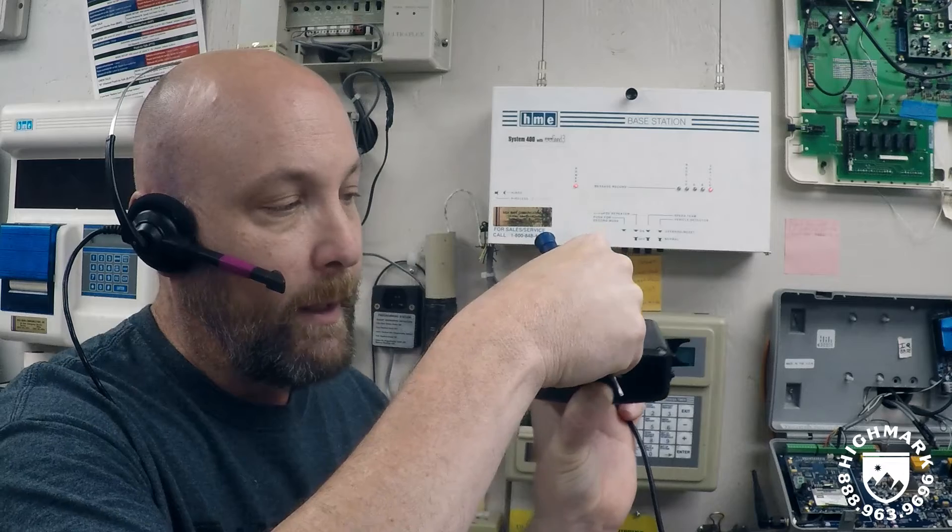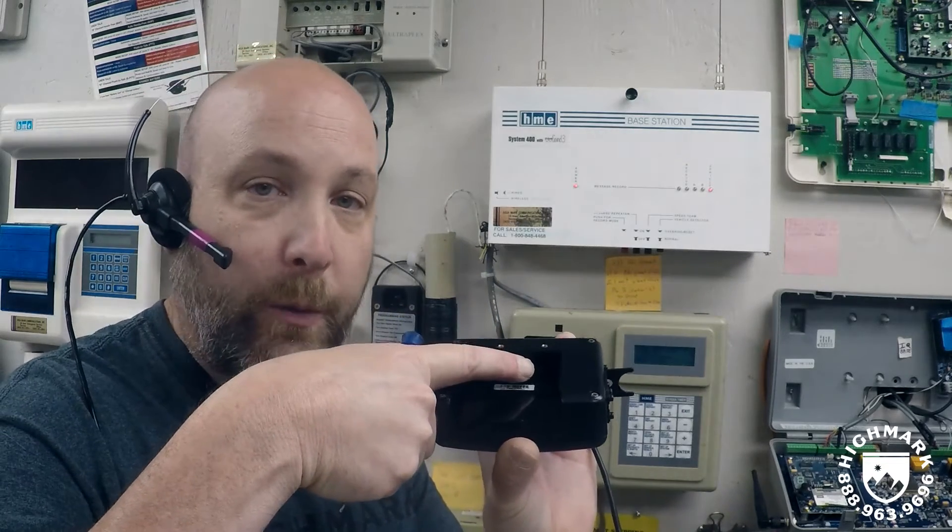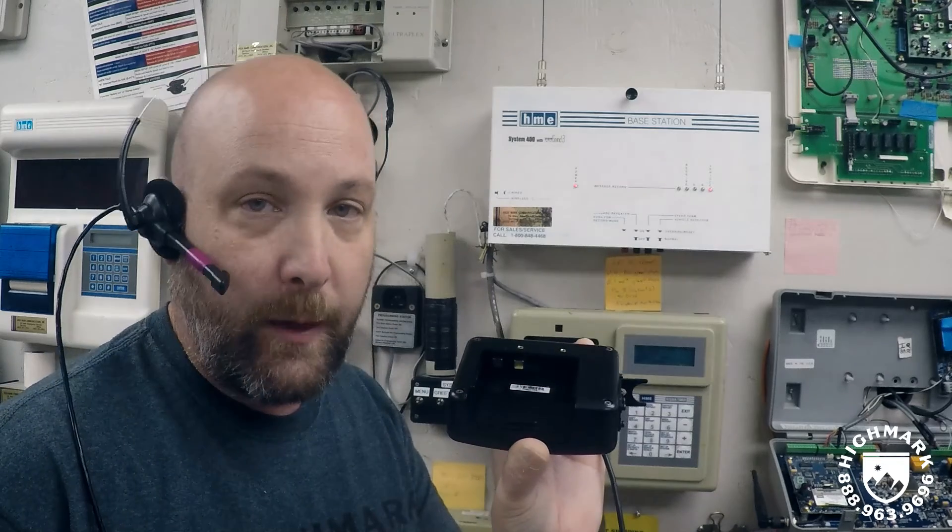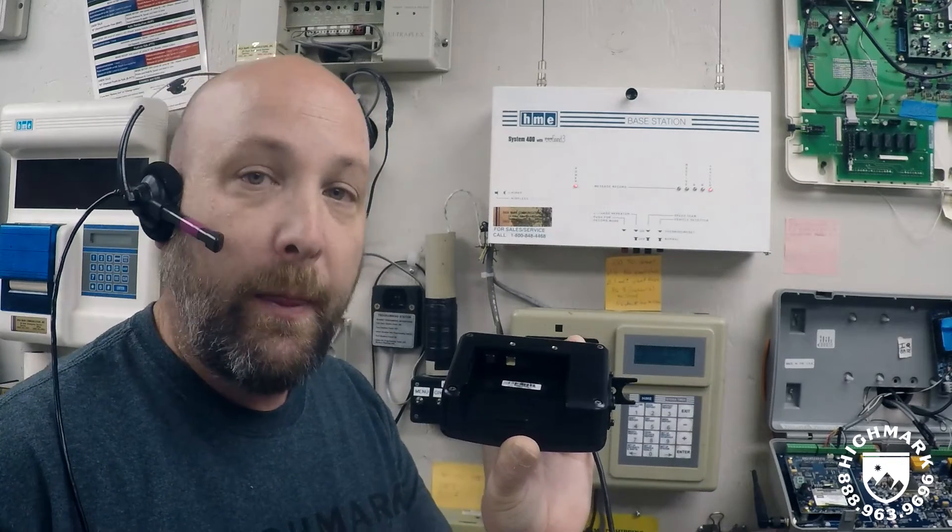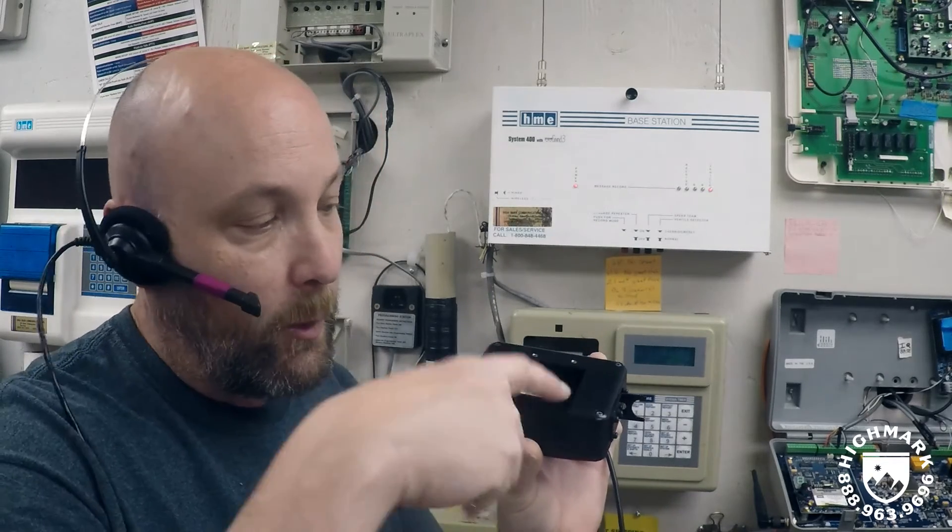If you grab one of the comms that you currently have at your business and take the rubber plug out, note the position of the dip switches in the comm that is currently working. Then with your new comm, you'll also remove the rubber plug.